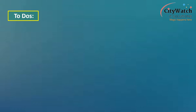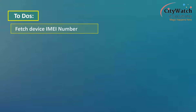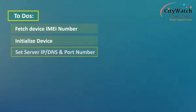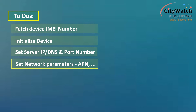Here is a list of activities I will be performing in this lesson. First I will fetch the device IMEI number, then initialize the device to factory default settings. Next I will set the server IP address and port number so the device knows what address to forward updates to. I will also set the network parameters like the access point name or APN, including the APN username and password.